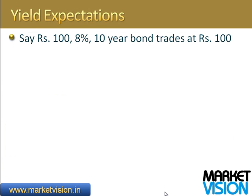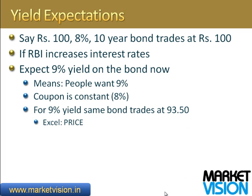Now, why do yields change? There are yield expectations set in the marketplace. Let's say a 100 rupee bond paying 8% is trading at par. If the RBI increases interest rates today, people may say, I want 9% on this bond. The coupon is still 8% — they're still going to pay you 8 rupees per 100 rupee bond. But for a 9% yield expectation, the same bond will fall in price. The yield expected has gone higher, so the price falls to 93 rupees 50 paise. Because there are 10 years left, the 1% change in yield has resulted in approximately a 6.5-7% change in price.